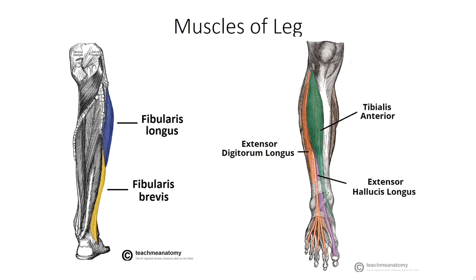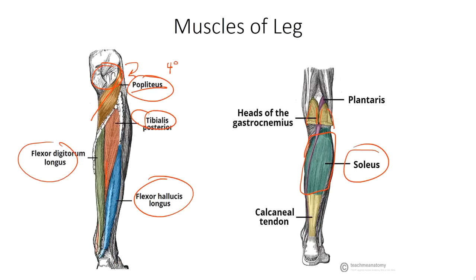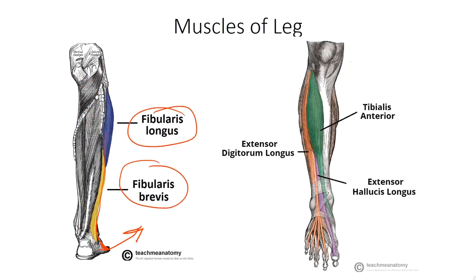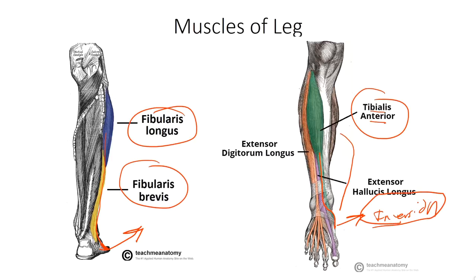In the lateral compartment, the two muscles to know are fibularis longus and fibularis brevis, which extend down the lateral side and allow for eversion of the foot. The posterior compartment reaches down on the medial side and allows for inversion. The tibialis anterior in the anterior compartment also reaches across to the medial side and allows for inversion. The extensor digitorum longus comes from the anterior compartment and extends the toes.